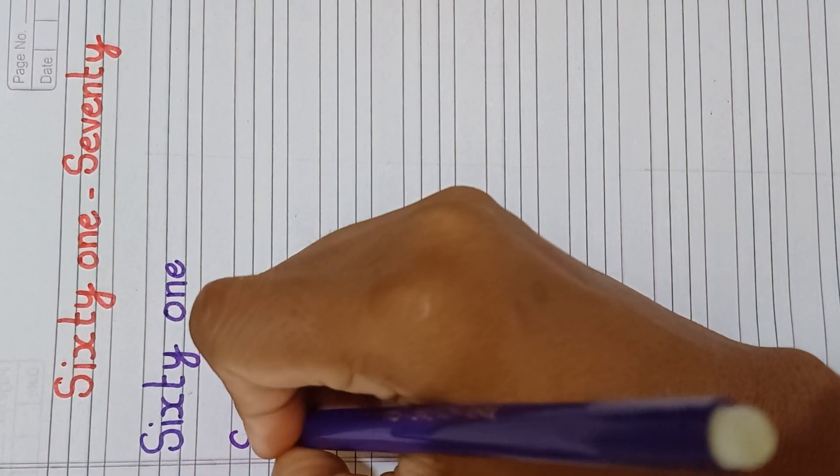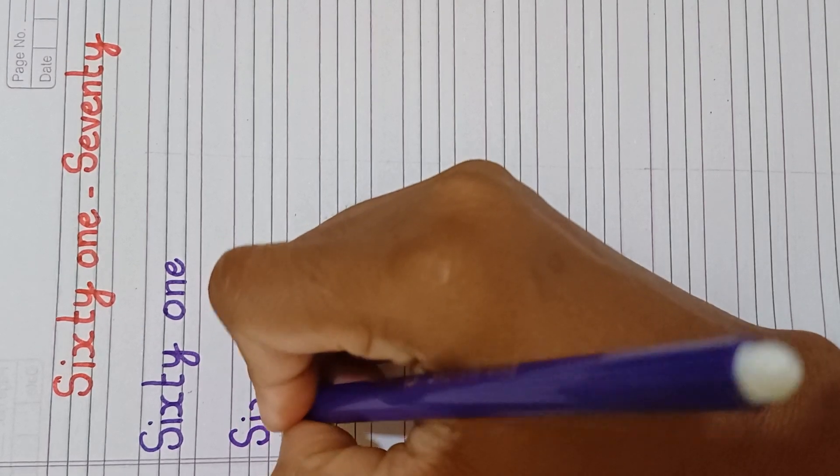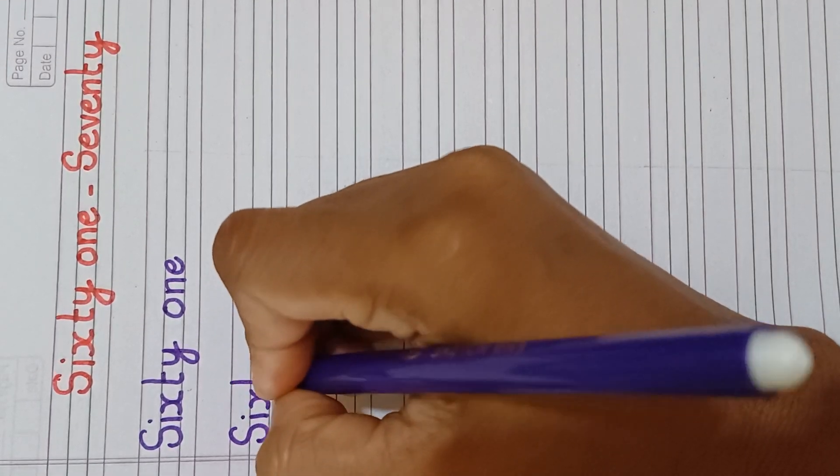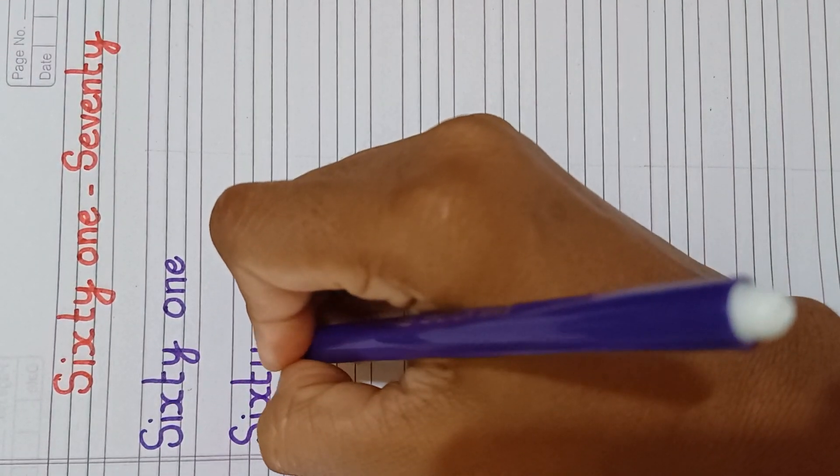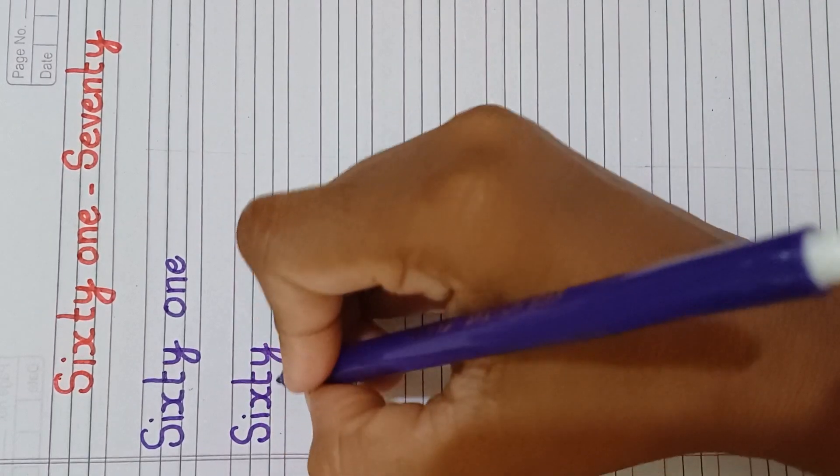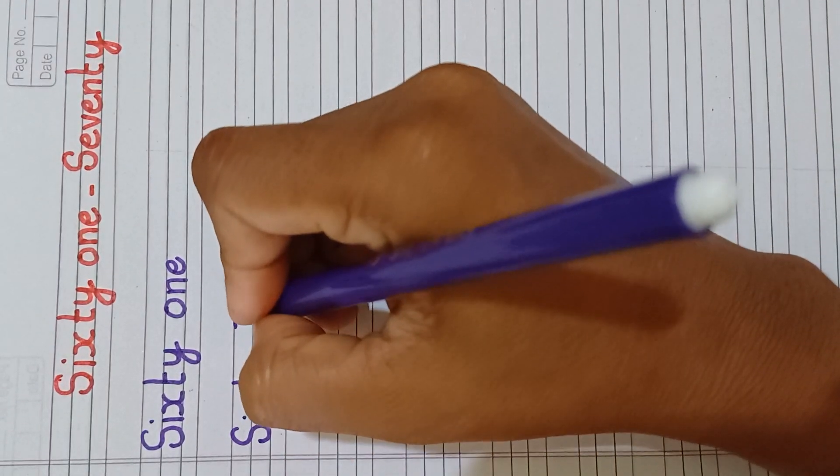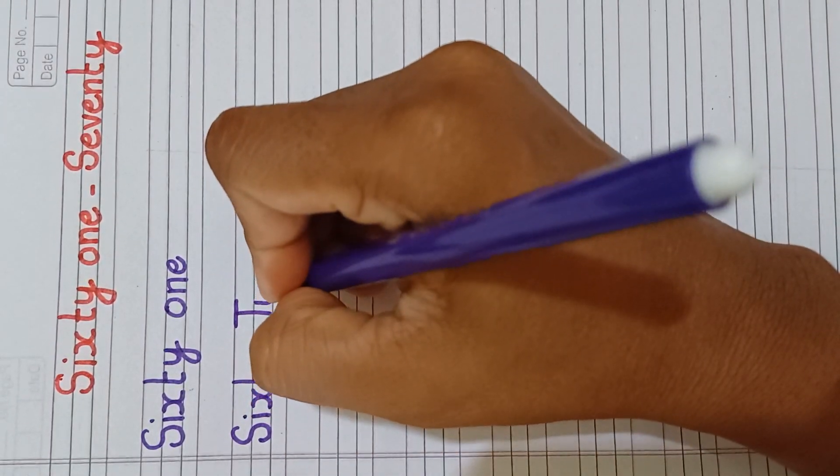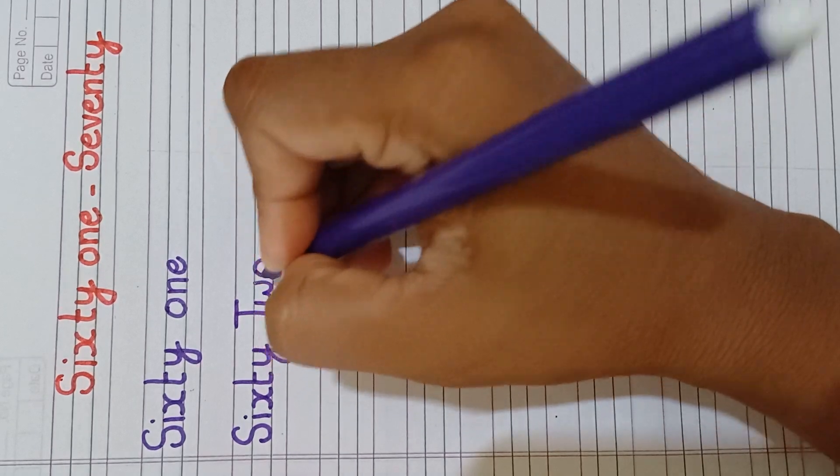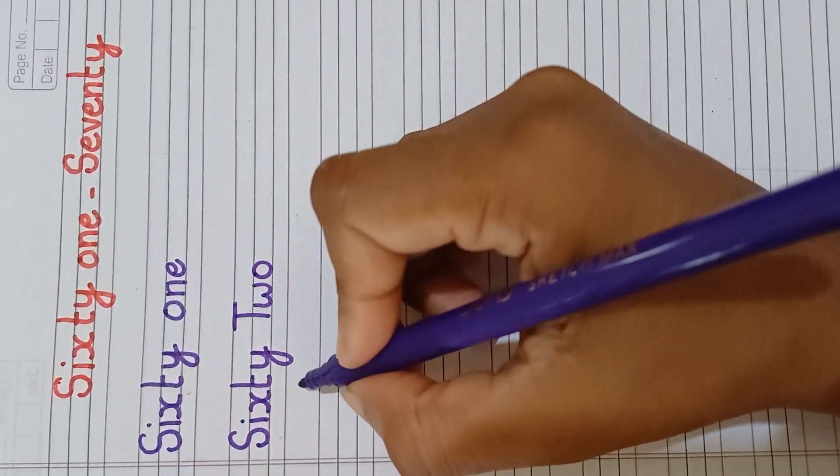S, I, X, T, Y, sixty. T, W, O, two. Sixty-two.